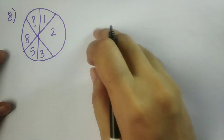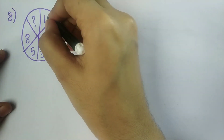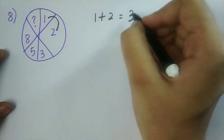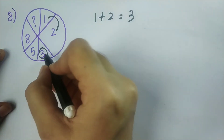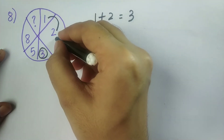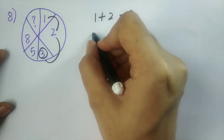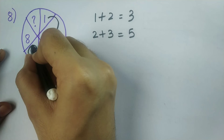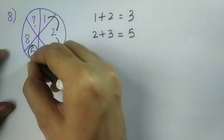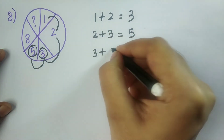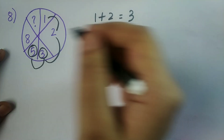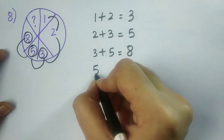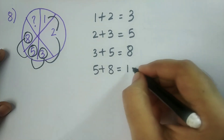The logic for this sum is we need to add the first two values. So 1 plus 2 is equal to 3 — I am getting this value. Now I should add these two values: 2 plus 3 is equal to 5 — I am getting this value. Now I should add these two numbers: 3 plus 5 is equal to 8 — I am getting this value. Now I should add these two numbers: 5 plus 8 is equal to 13.